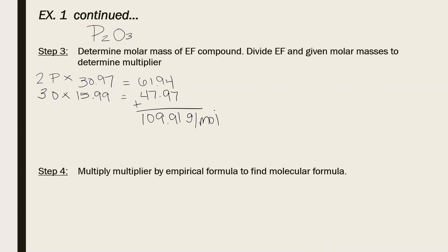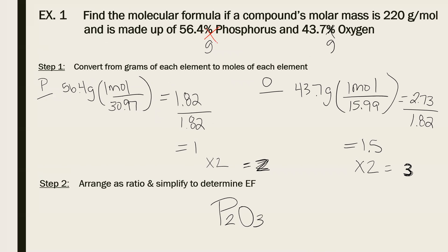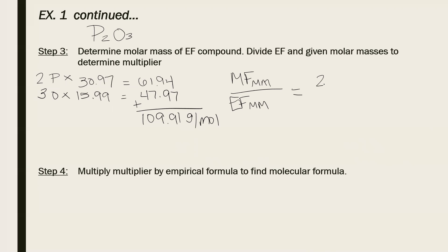To determine the multiplier, you take the molecular formula molar mass over the empirical formula molar mass. So if you look back in the problem, here is my molecular formula molar mass 220 divided by my empirical.